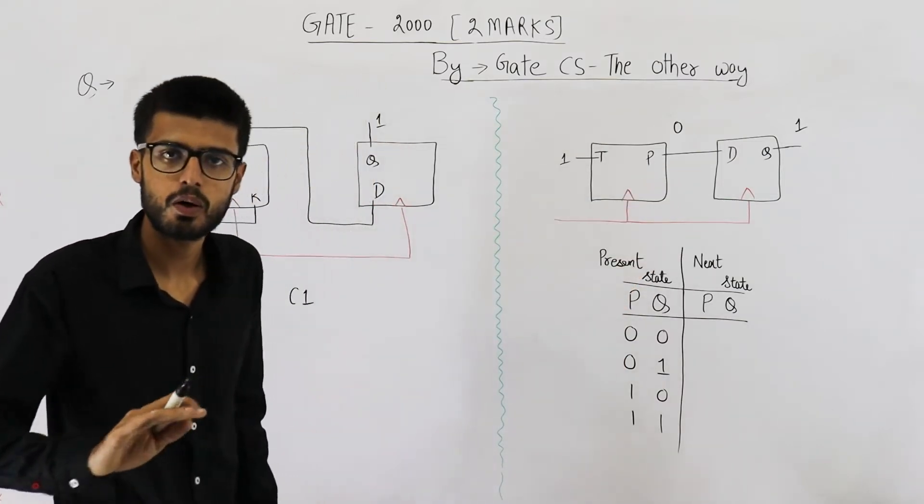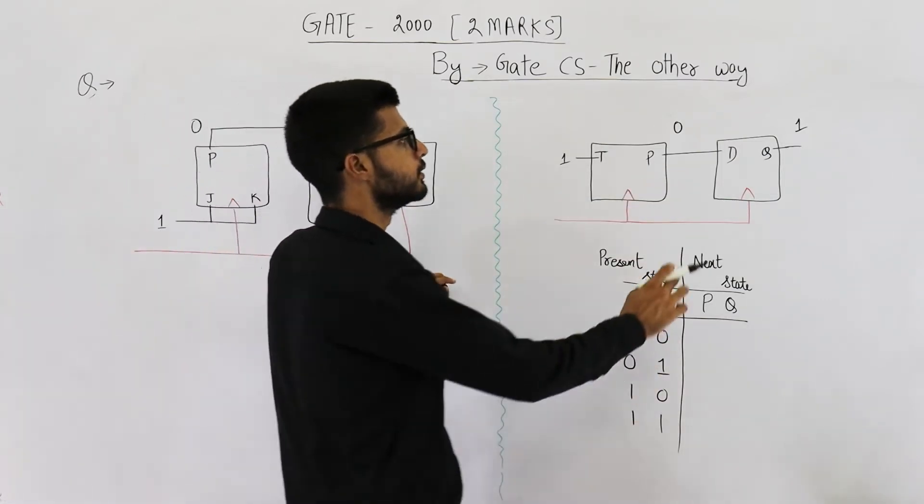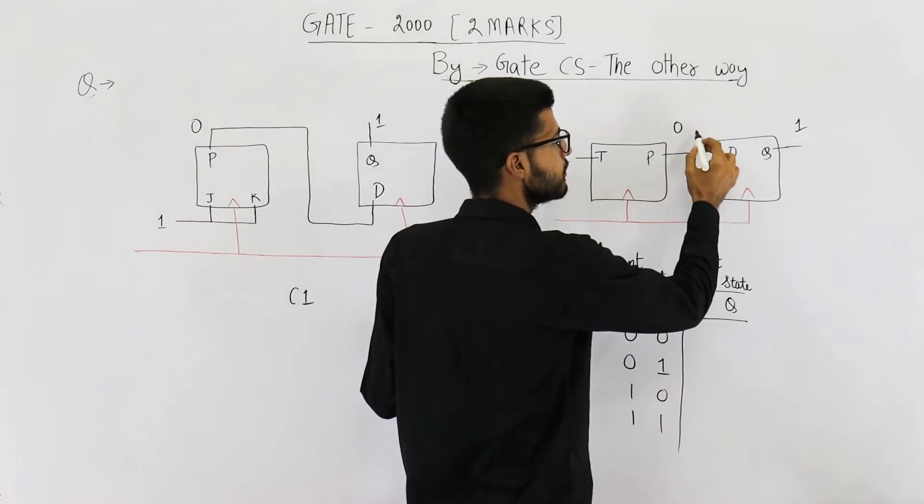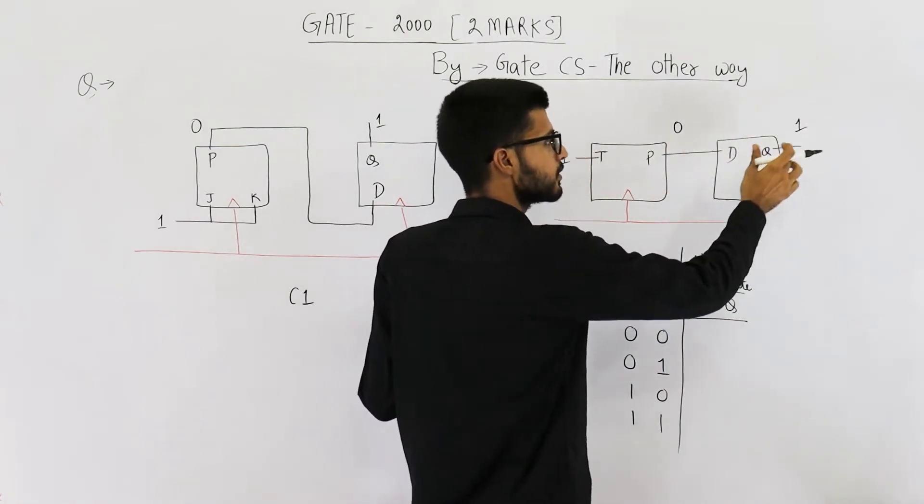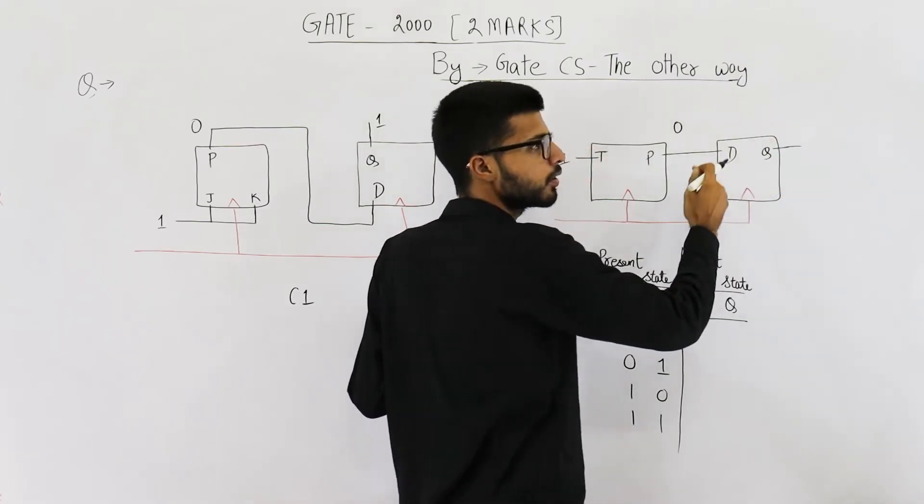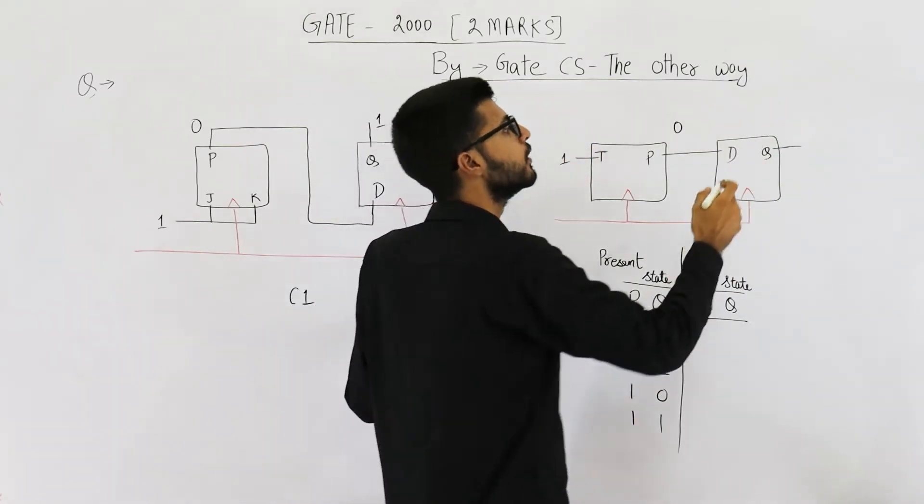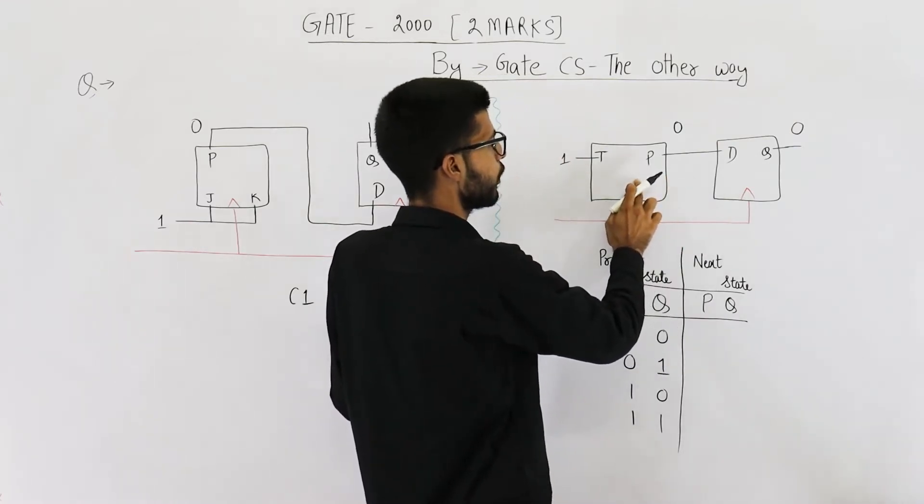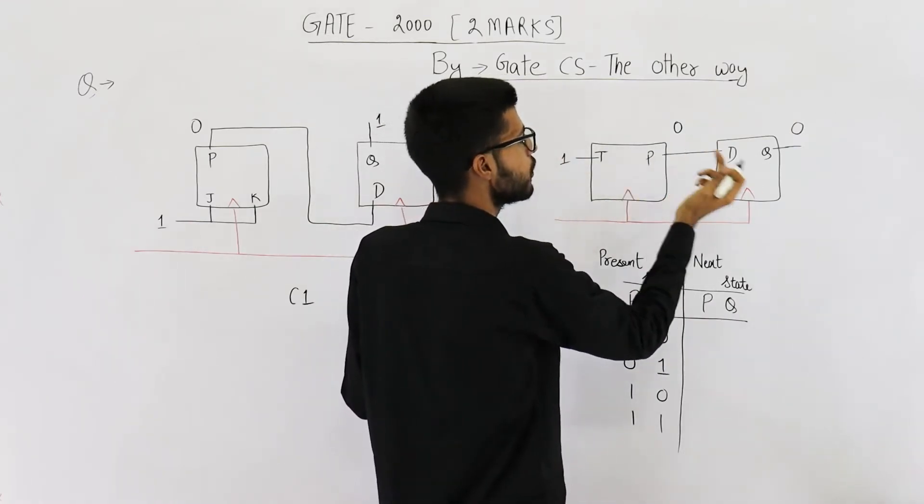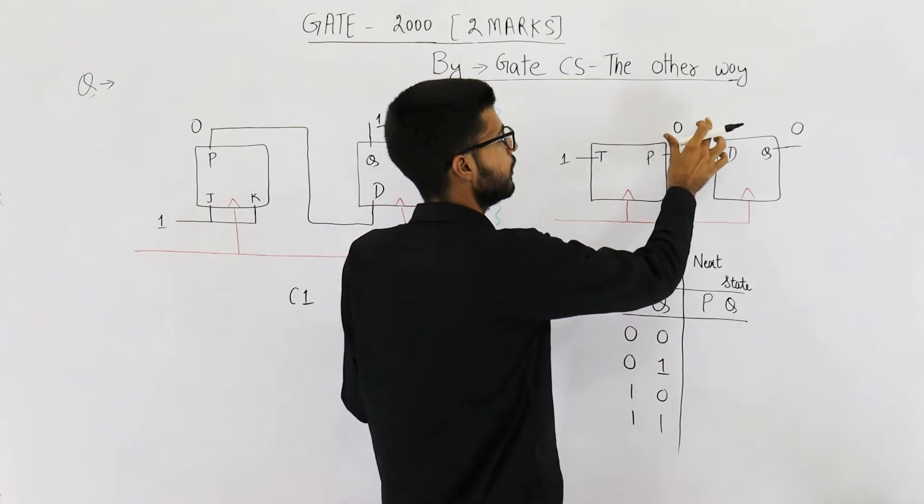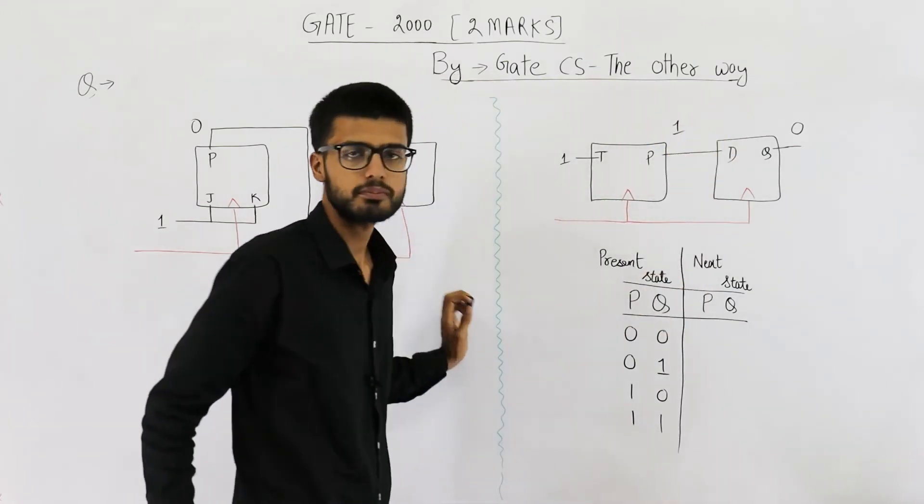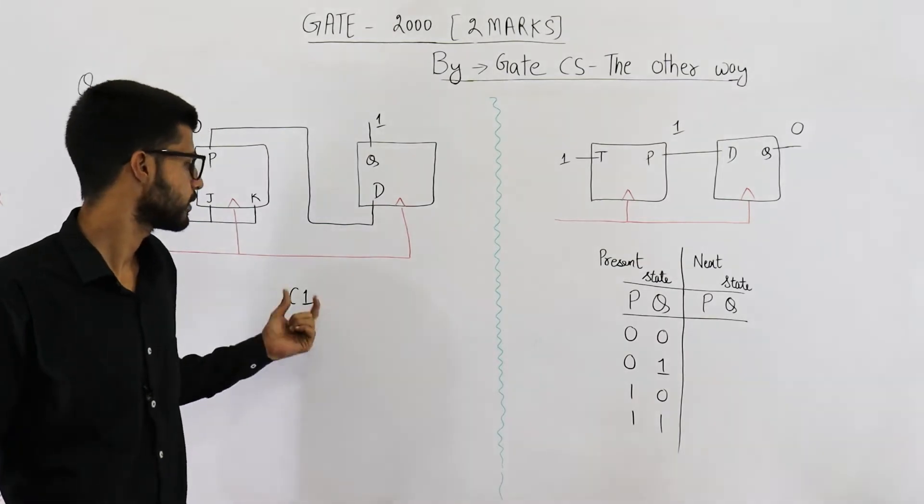Now both of them will react to the clock at the same time. This one its input is zero. That means this zero will be transferred here because it's a D flip-flop. Whatever is the input will be shown as the output only. So this one is turned to zero and this is a T flip-flop. So this P will toggle because T is one. Upon toggling it will change to one. This is the output upon seeing the first clock.